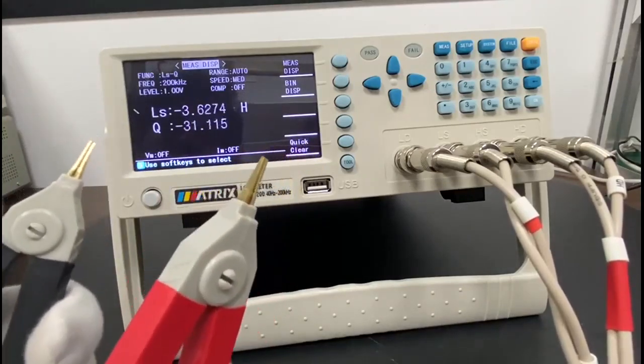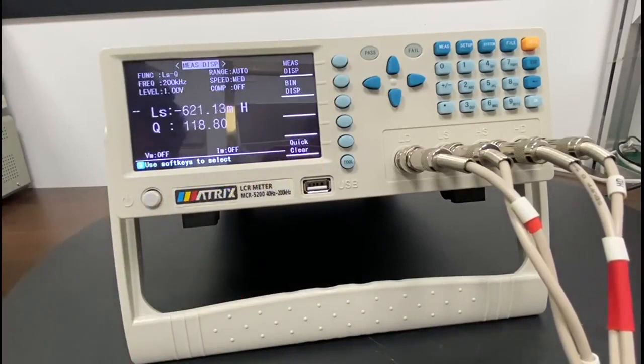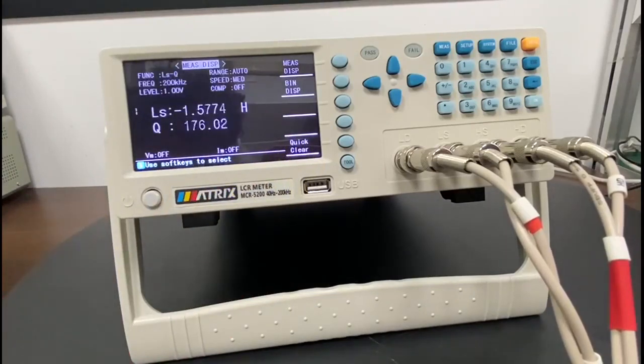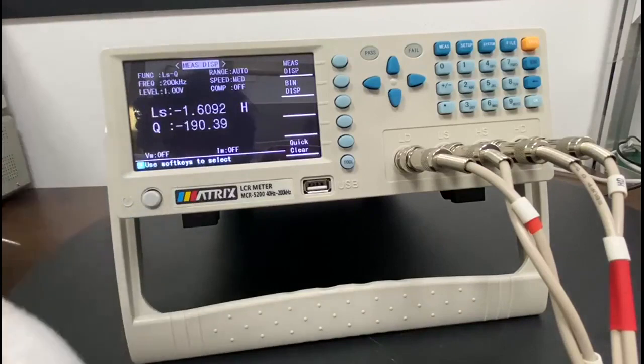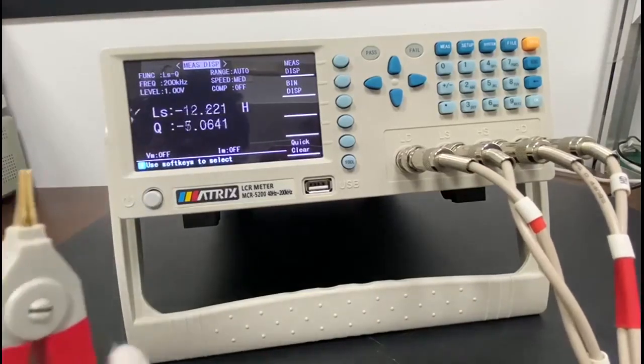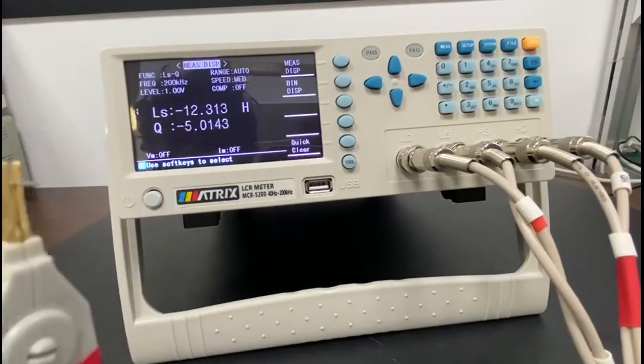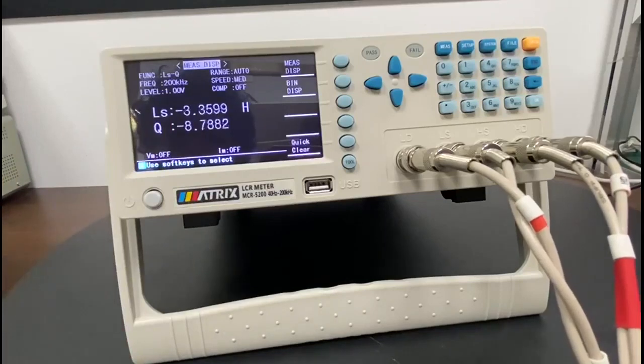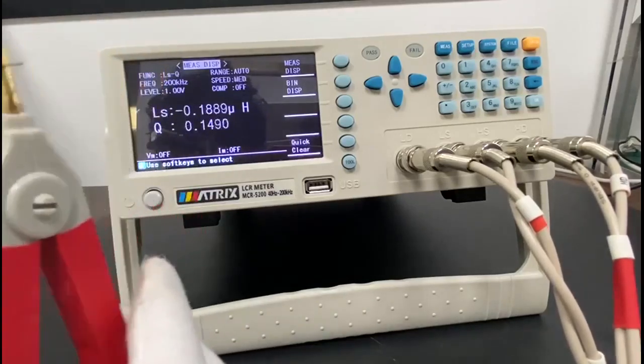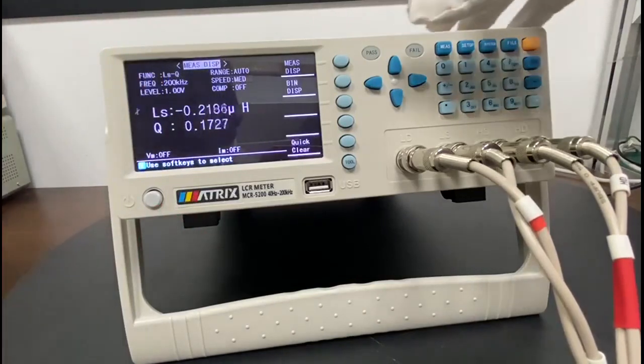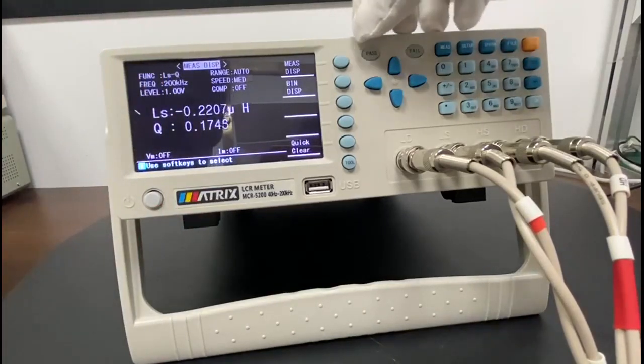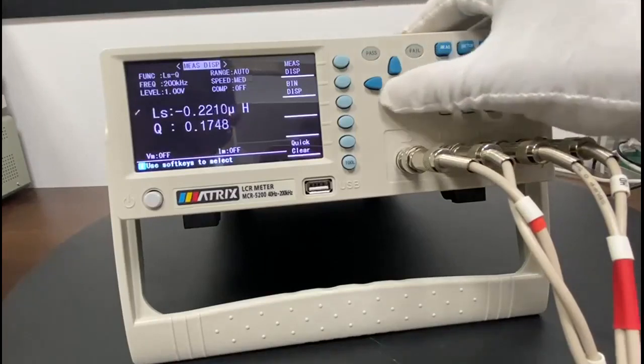So at first I'll measure the capacitance. So I just take one capacitor and simply just connect with this probe. To measure the capacitance I need to select it. How to select this? First I need to use the directional key.